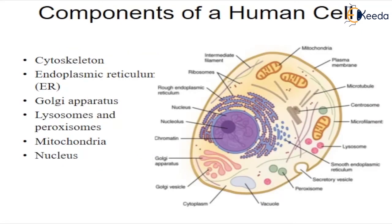Cytoskeleton is a network of long fibers that make up the cell's structural framework. The cytoskeleton has several critical functions including determining cell shape, participating in cell division, and allowing cells to move. It also provides a tract-like system that directs the movement of organelles and other substances within the cell.